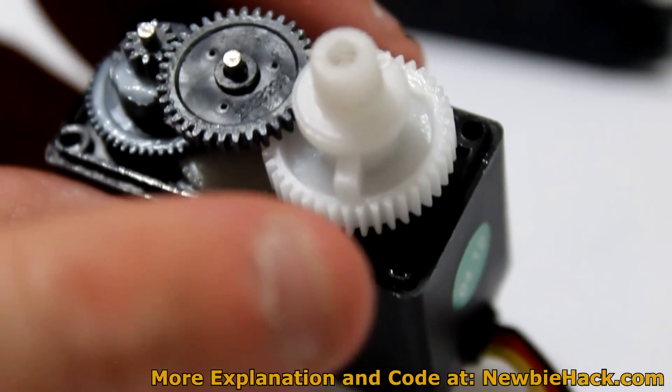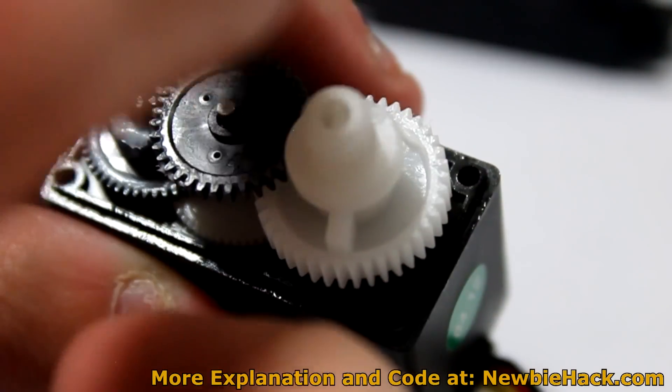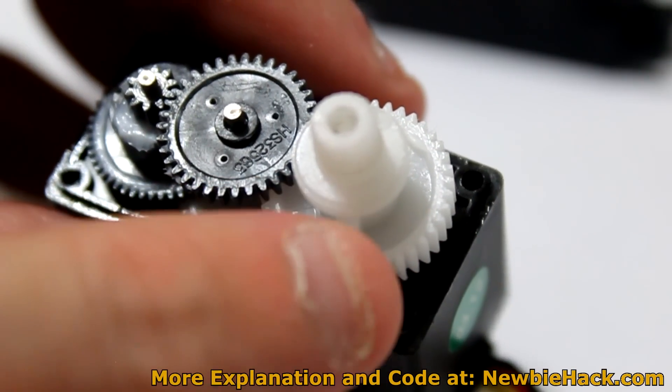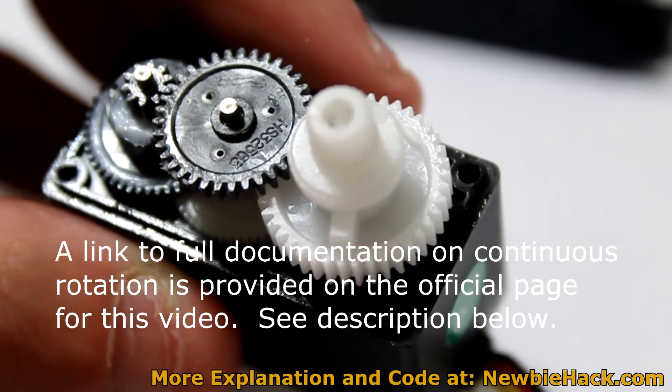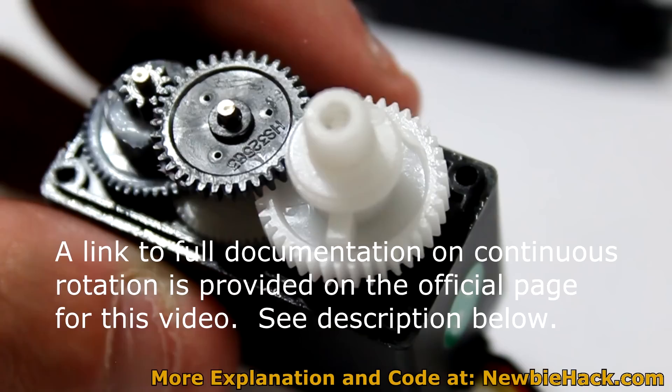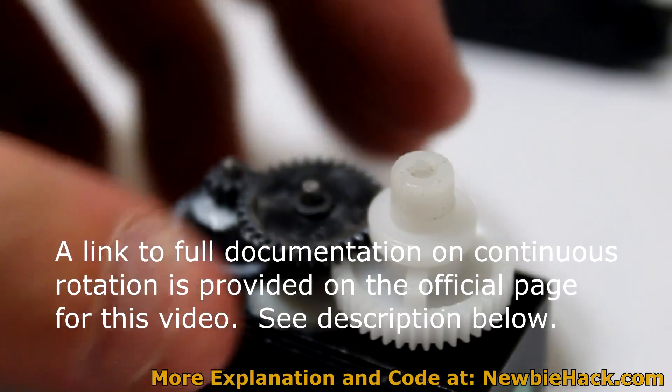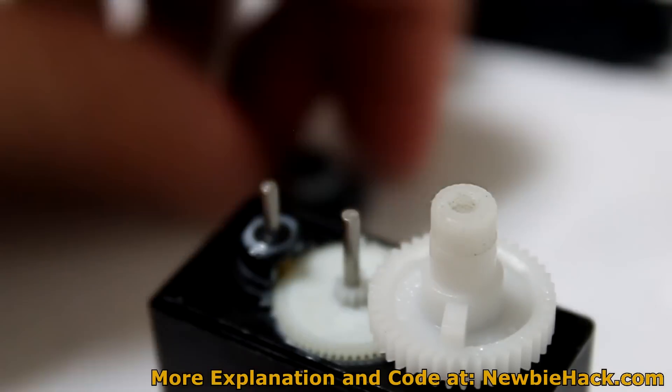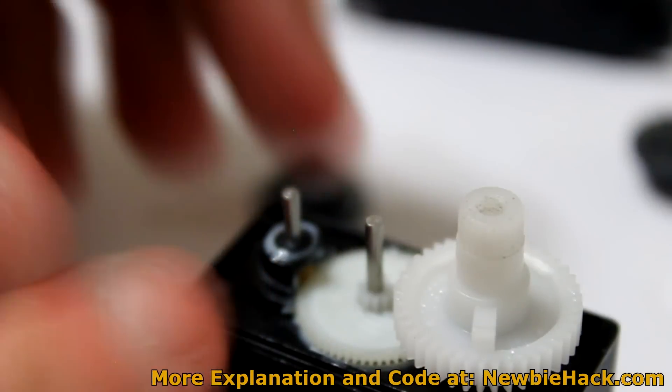And there is a little tab here that keeps it from turning too far in one direction. So it will only be able to go 180 degrees around. And a lot of people actually remove this portion of it so it can be a continuous turning servo.